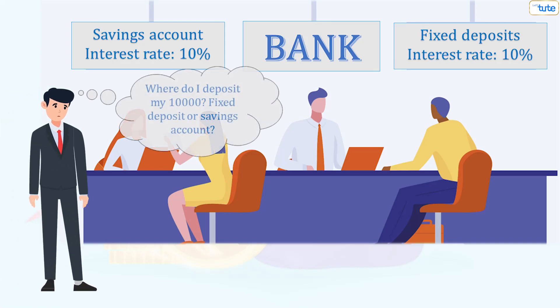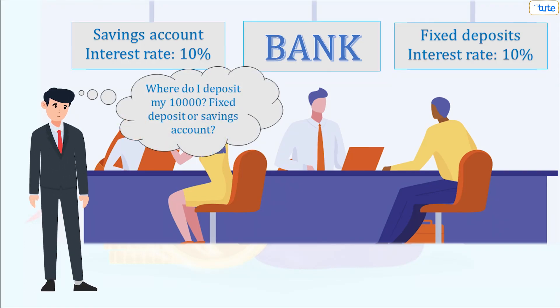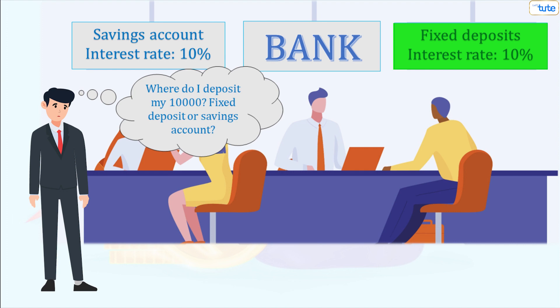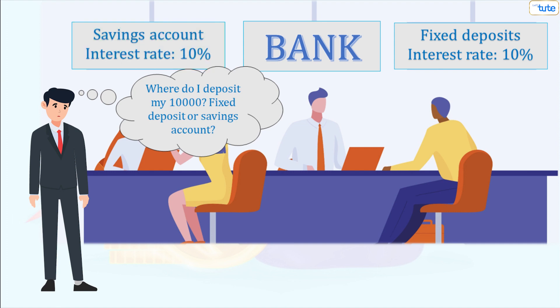John has 10,000 rupees and wishes to invest it for 3 years, but he couldn't decide whether to put his money in a fixed deposit or a savings account. A fixed deposit will offer him more money through compound interest, whereas a savings account will return him additional money based on simple interest. Both have the same interest rate of 10%.